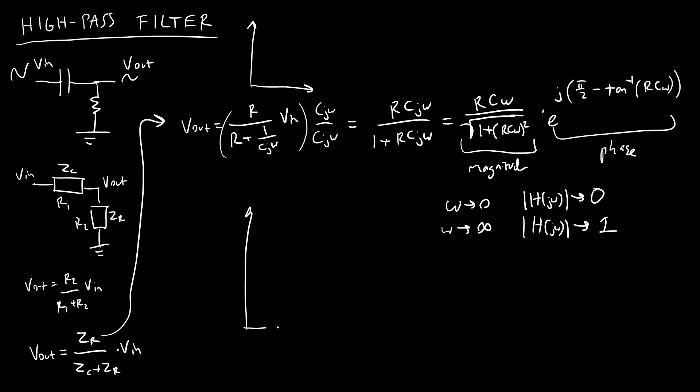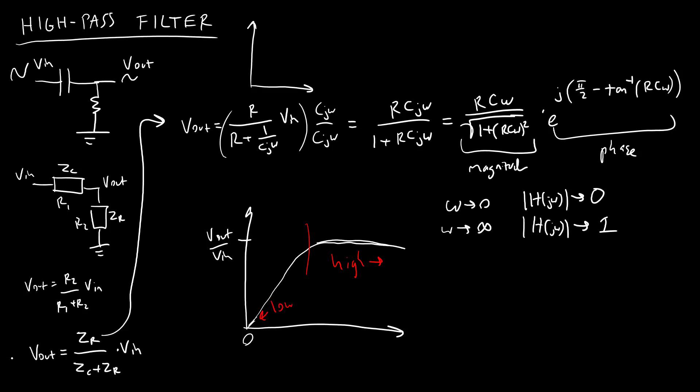So if I plot my frequency response, I'm kind of going to get the opposite of what I did for the low-pass filter, where I'm going to have this approaching zero as the frequency gets to zero. But then as the frequency gets higher and higher, I am going to approach one. So exact same process and concept as a low-pass filter. Difference is that now I am passing the high-frequency signals through and cutting off the low-frequency signals.